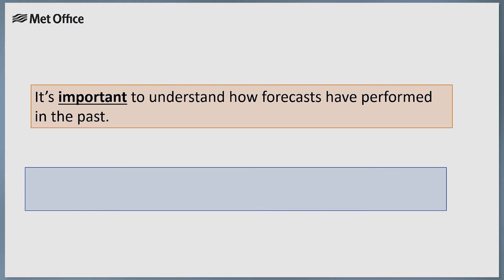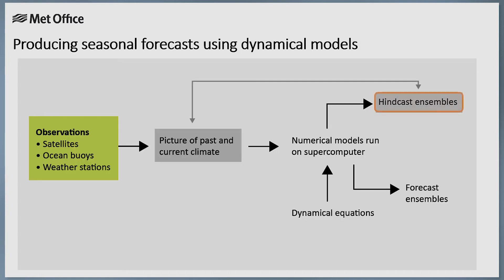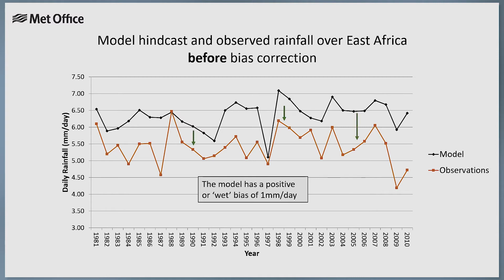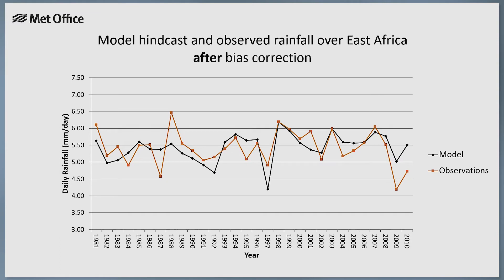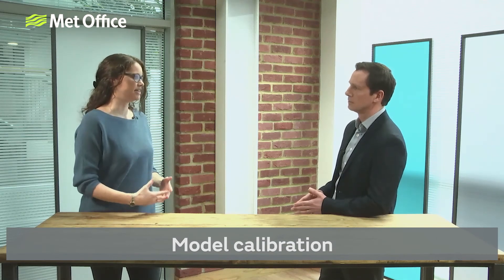Before using and trusting the output from a seasonal forecast, it's important to understand how well forecasts have performed in the past. This can be done using the hindcasts to determine the extent of any model bias, by comparing the hindcasts with the observed climatology of the same region and period. For example, the model hindcast over East Africa in the 30-year period from 1981 to 2010 shows a wet bias — the model predicted more rainfall than was observed. The average bias is calculated to be about 1 mm per day. We can remove this bias by subtracting 1 mm per day so the hindcast fits observations more closely, and future forecasts can be adjusted in the same way. Removing bias in dynamical models is known as model calibration, done using more sophisticated statistical techniques.